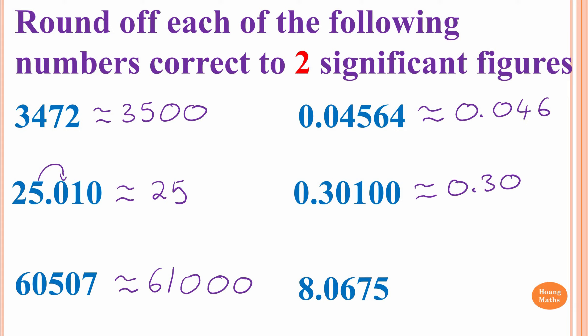8.0675: we count the first and last digit, so everything in between must also count. That gives us 1, 2, 3, 4, 5 — so 5 significant figures. We want 2, giving us 8.0. Before writing 8.0, we check the number after 0, which is 6. From halfway onward we round up, so instead of 8.0, it becomes 8.1. That is 2 significant figures.